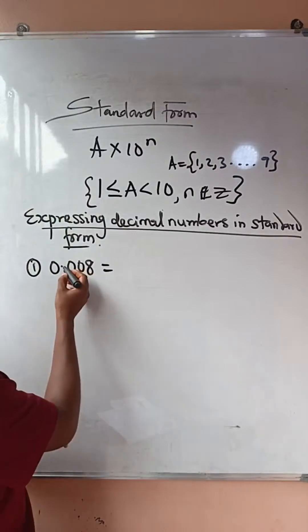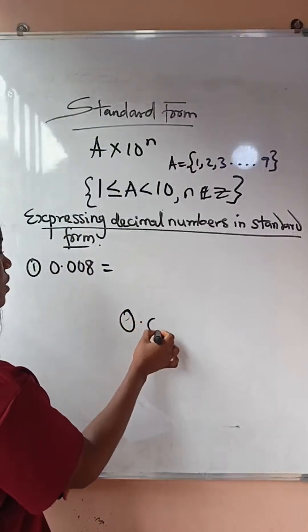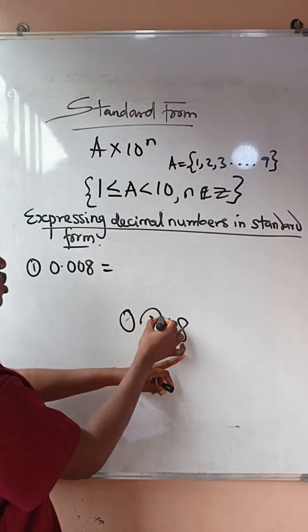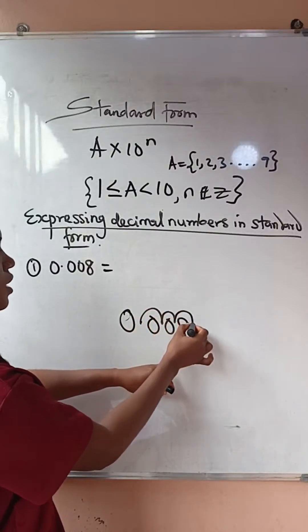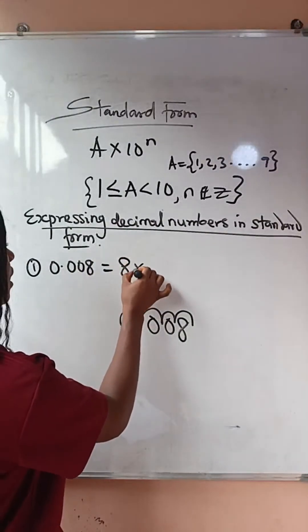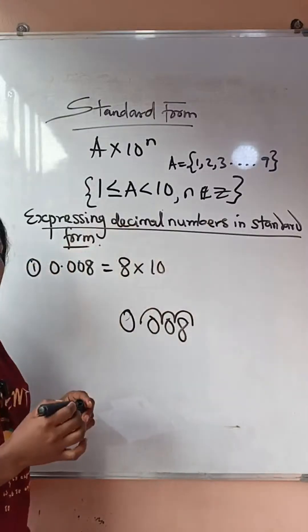So because I need to shift this decimal point, this is what I have. To get to that eight as my A, I need to shift this decimal point to get to eight. You can see that. So write eight times 10 to the power of.